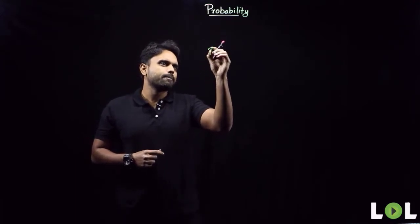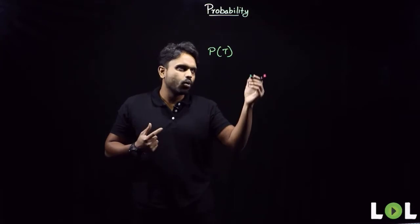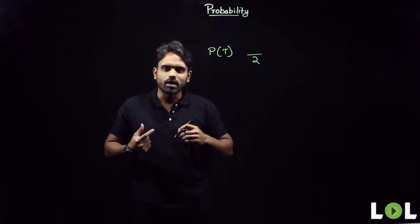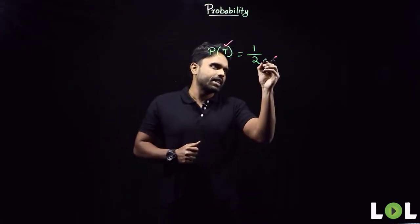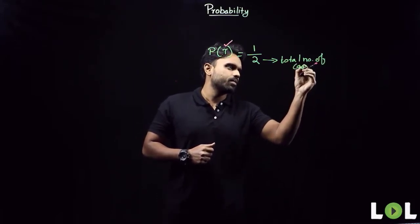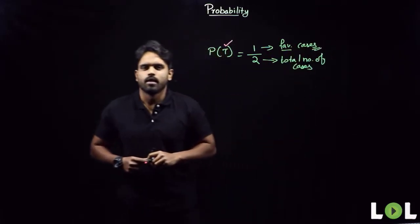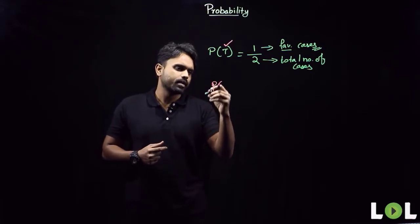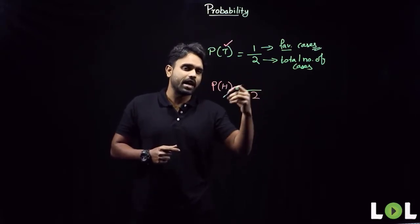Before that, I have an example for you. I'm going to toss a coin and ask: what is the probability of getting a tail? The probable outcomes are either a head or a tail, so the total number of outcomes is two. The favorable outcome — getting a tail — is one. Similarly, probability of getting a head: total cases is two, favorable cases is one.